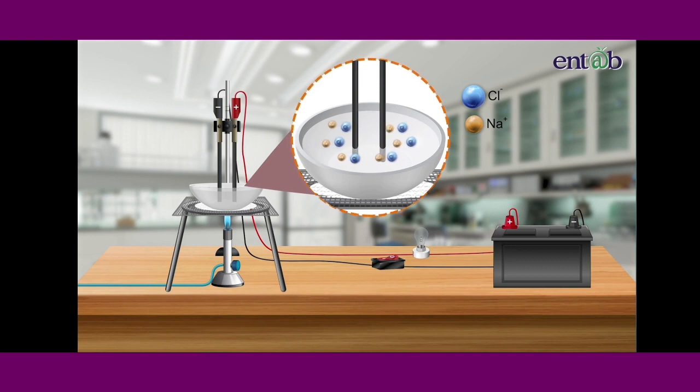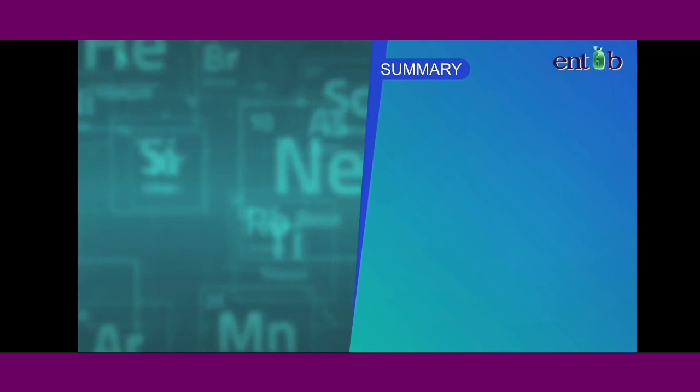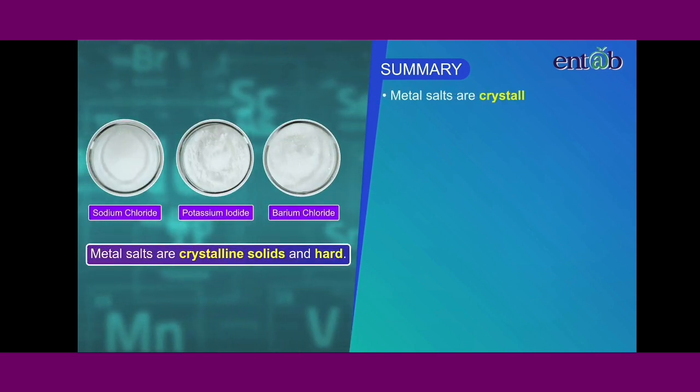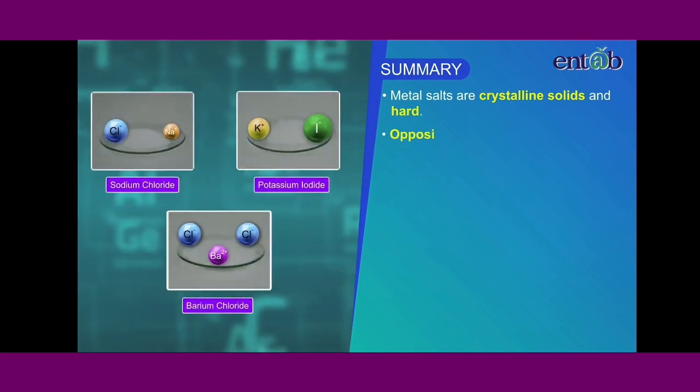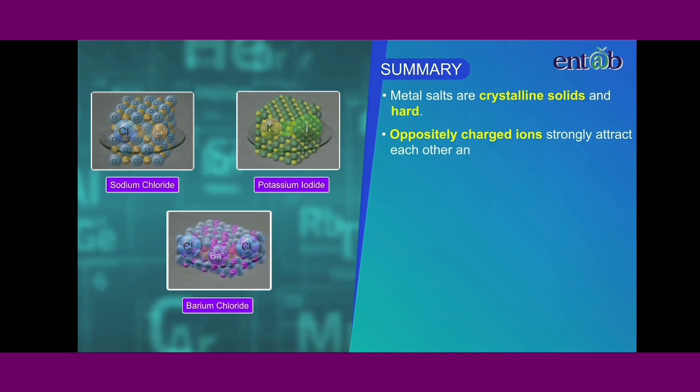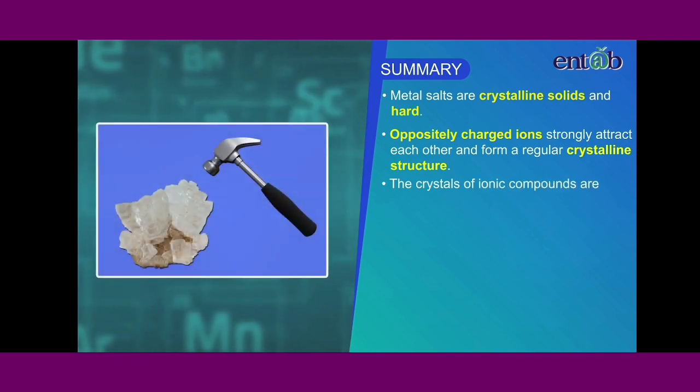Thus the ions move freely conducting electricity. Let us now encapsulate what we have learnt in this module. Metal salts are crystalline solid and somewhat hard. These ions strongly attract each other and form a regular crystalline structure. These crystals of ionic compounds are generally hard and brittle.